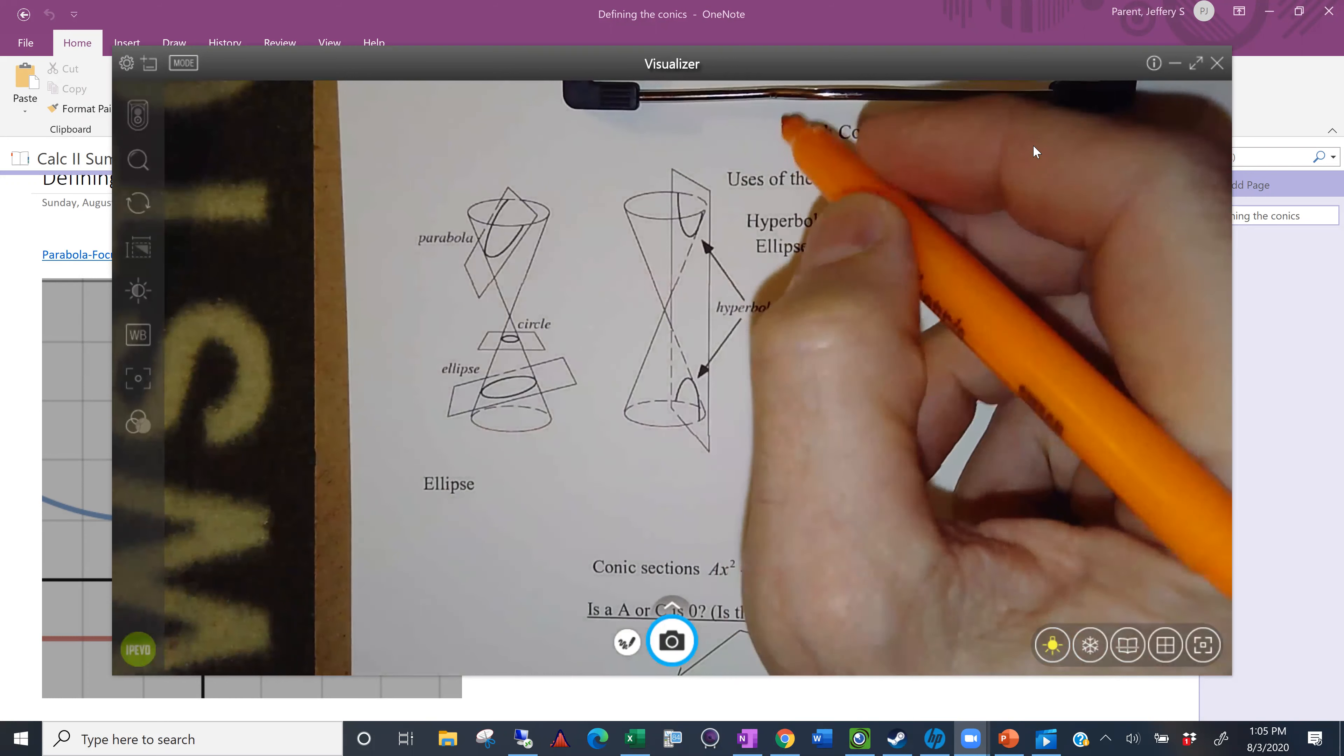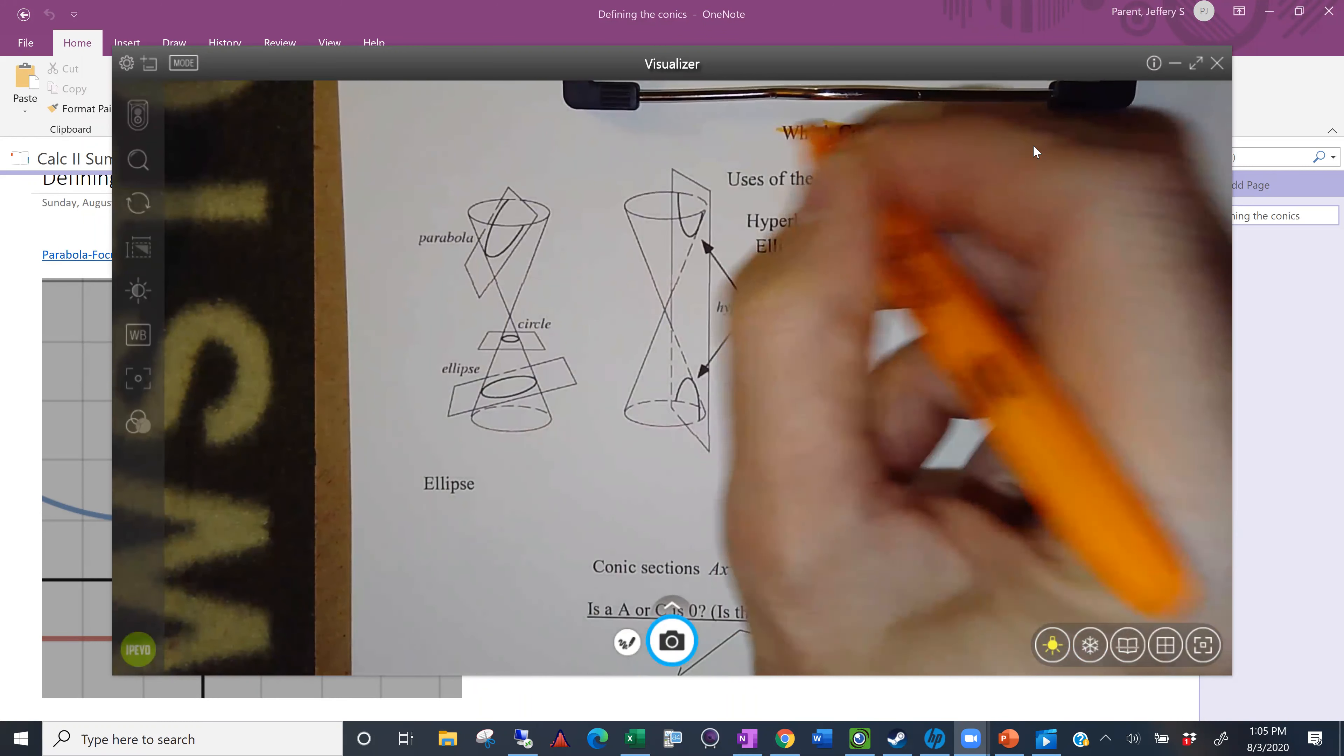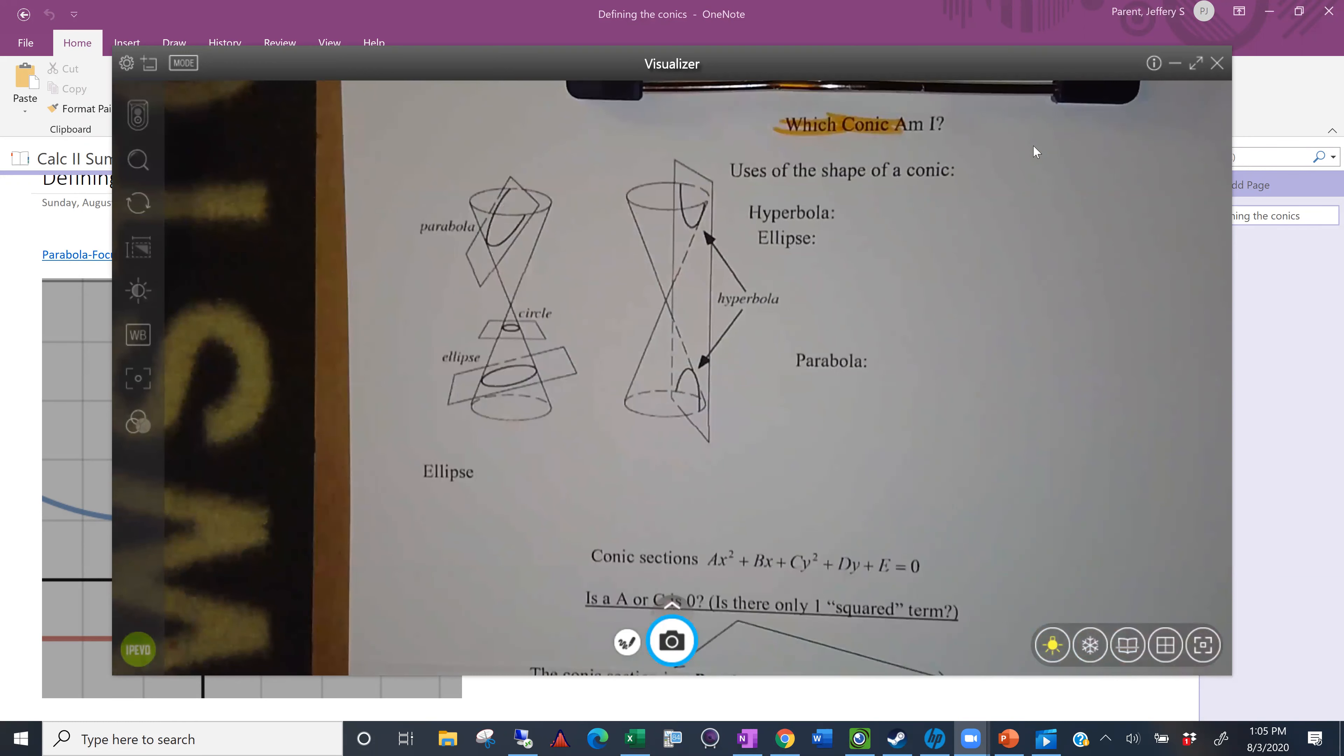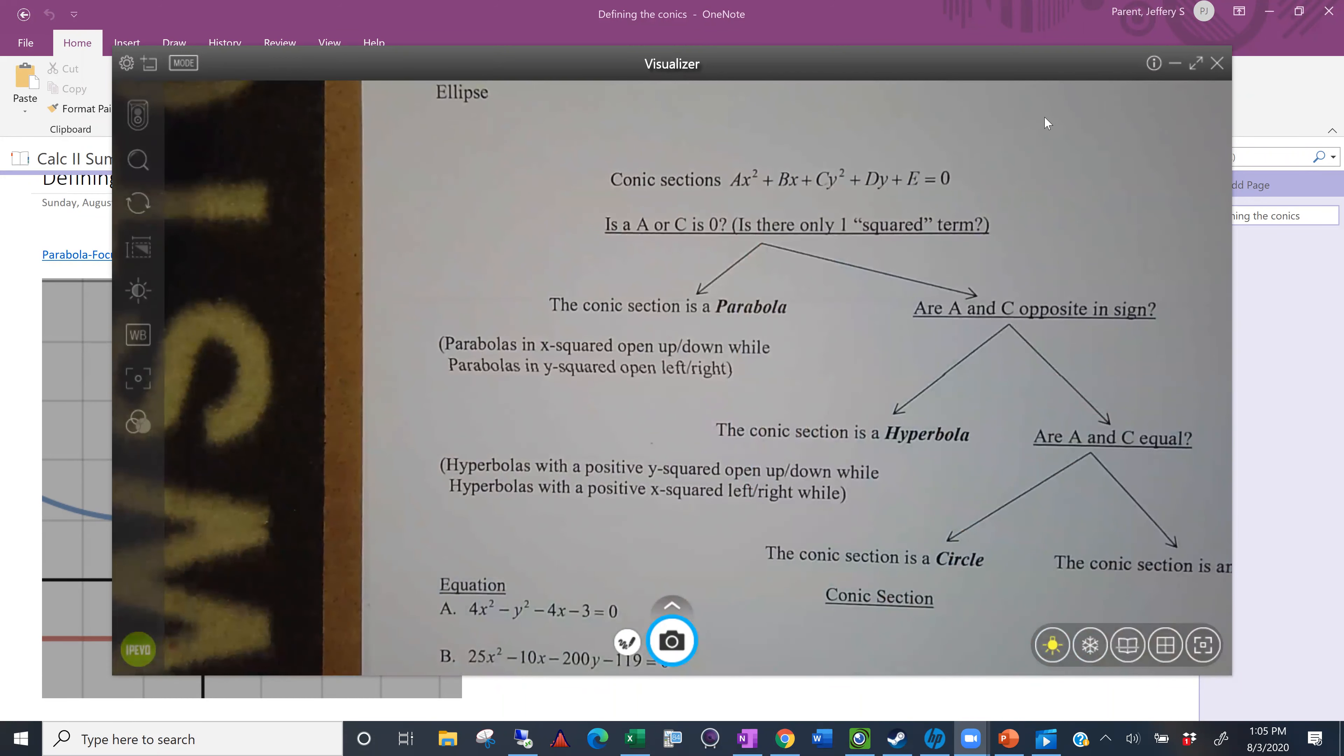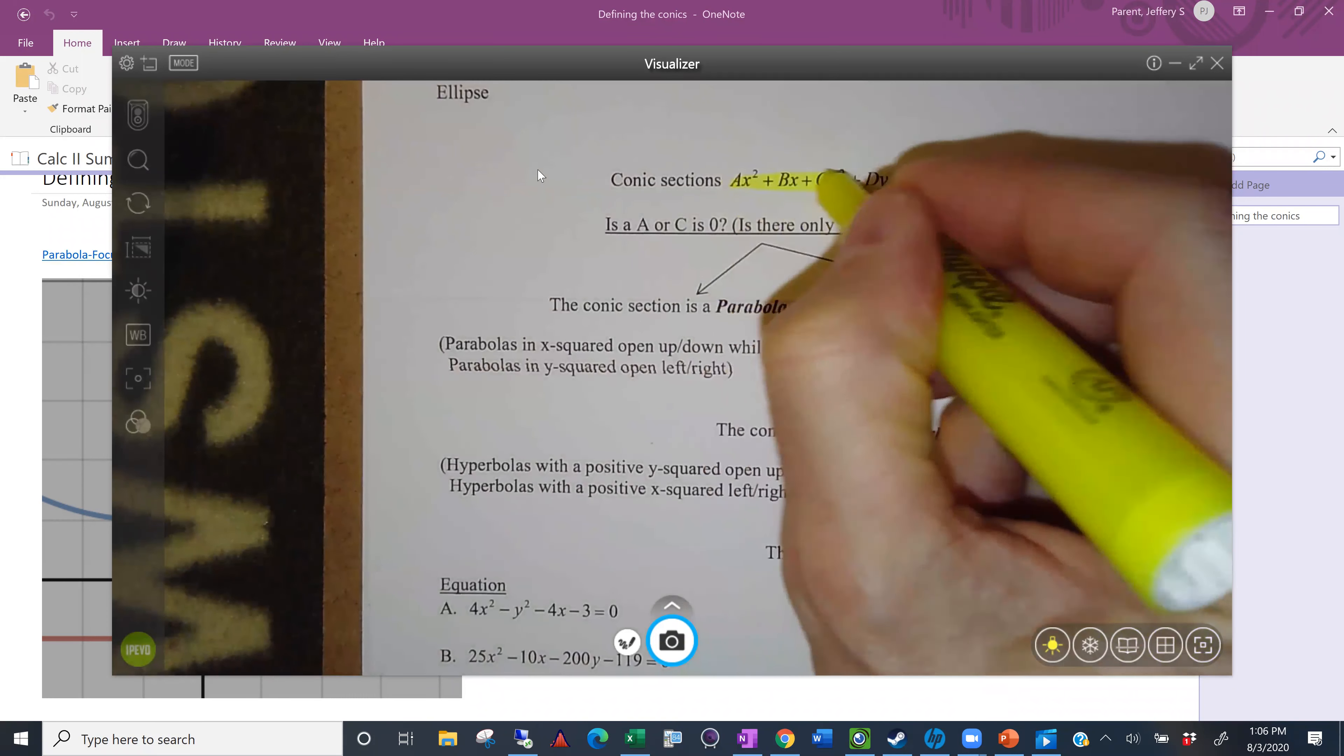We're going to work with conic sections in 10.5 and 10.6. In particular, there's a couple things I'd like you to get here. One of them is, what conic are you looking at? The conic sections are basically special cases of this equation for different values of A and B. I'm hoping that some of this is review from your college algebra, but I will go through it carefully but quickly. The big thing is what conic section are you looking at, and you can tell just by looking at this equation.